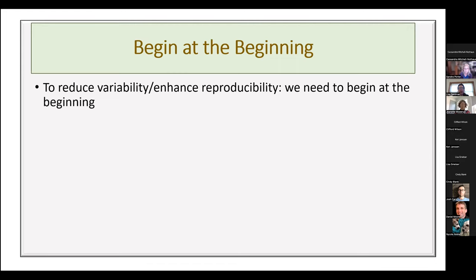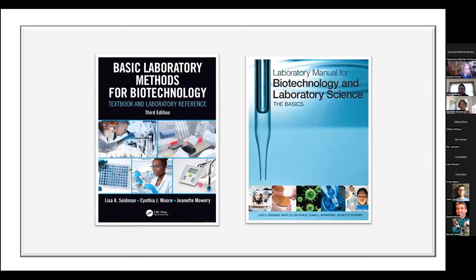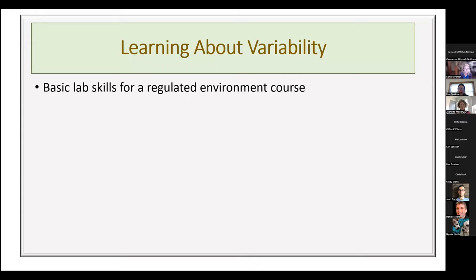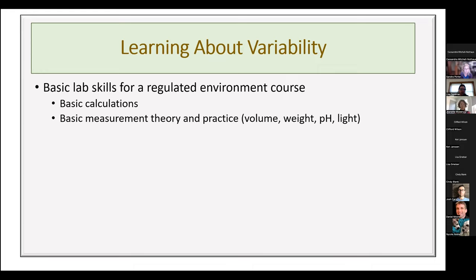We think that to reduce variability or enhance reproducibility, we need to begin at the beginning. We have a course called Basic Lab Skills for Regulated Environment — and when we say basic, we don't mean electrophoresis or PCR. We mean really basic: calculations for making a one-molar solution, measuring volume, weight, pH, light, and making simple reagents and buffers.